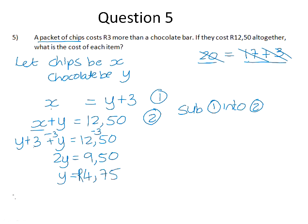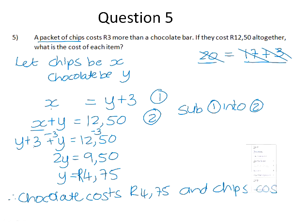That means that the chocolate, because remember that we let Y be the chocolate, costs 4 rand 75. And the chips were 3 rand more expensive, so the chips cost 7 rand 75.